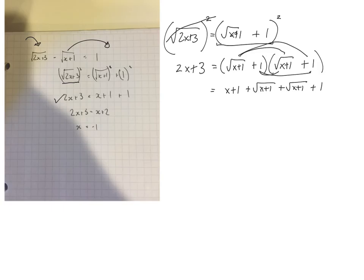Let's keep messing with the stuff on the right side here. So I'm going to have x. I can collect this one and this one, so that's plus 2. And then I have two of these, so I'm going to call that 2 root x plus 1. And all that's equal to 2x plus 3.